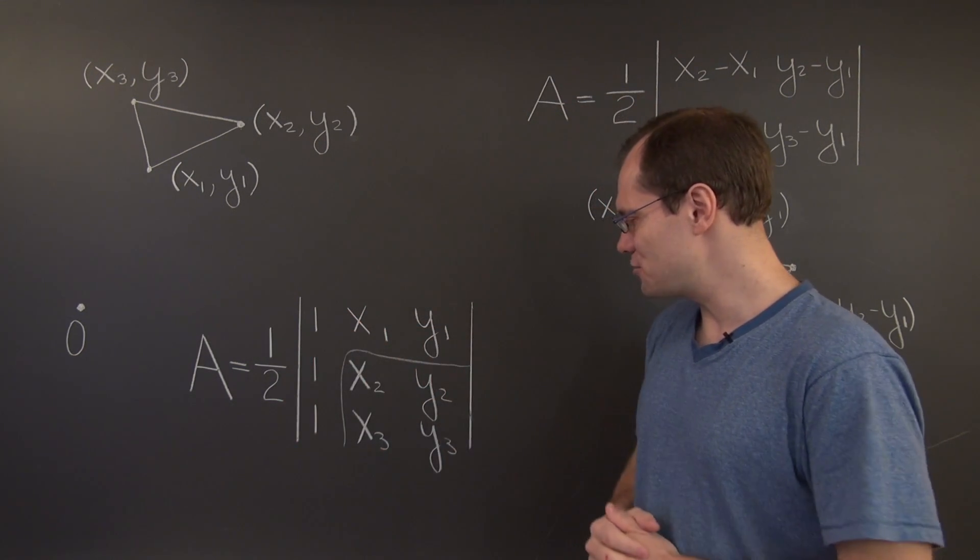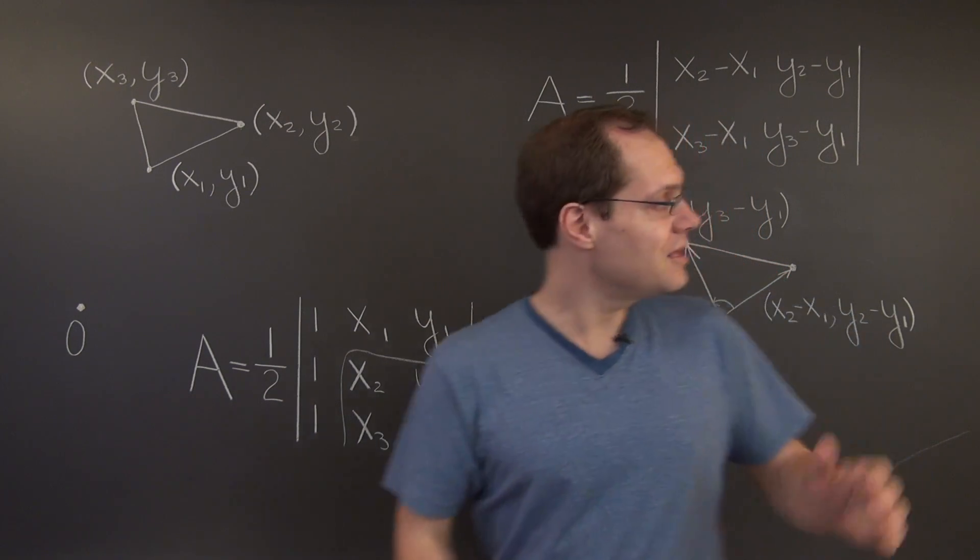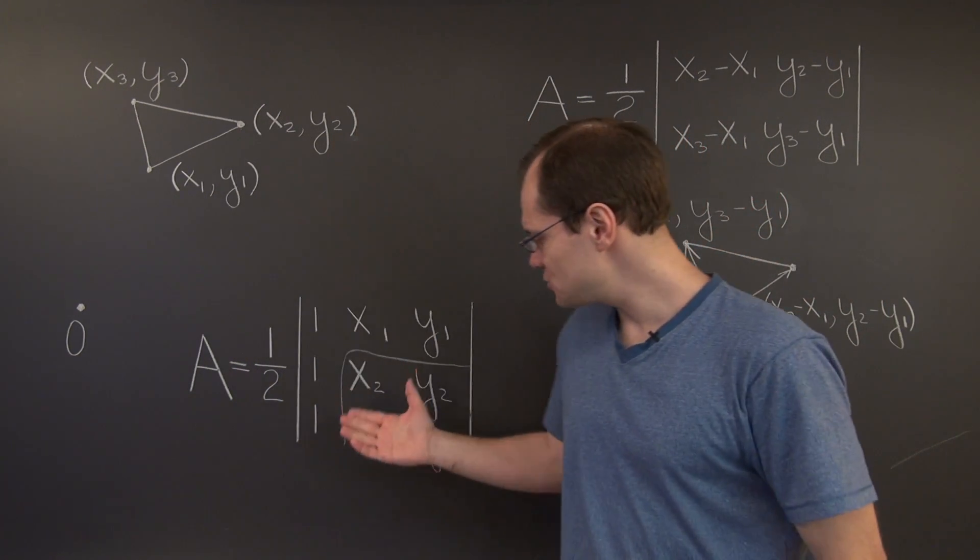And we know that the determinant of the resulting 3 by 3 matrix with two zeros here will be 1 times this determinant. So there you go. This 3 by 3 determinant equals this determinant. But it is much more elegant.